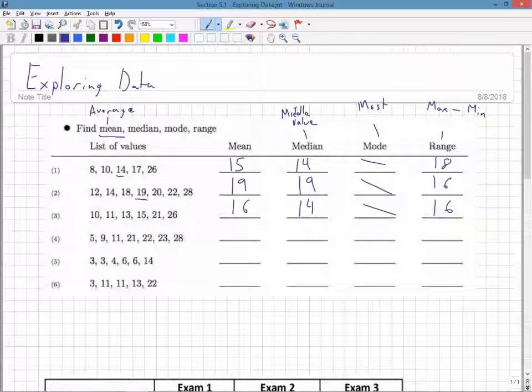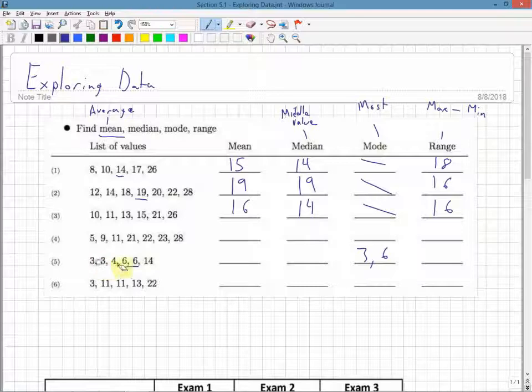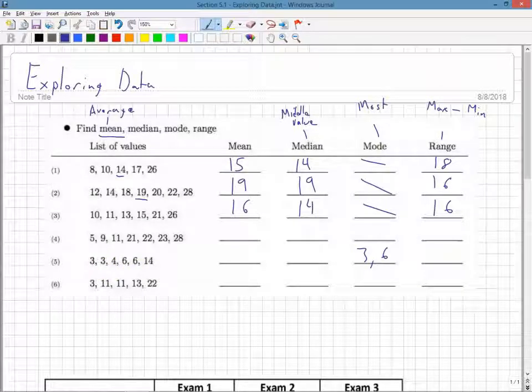Let's look at one that would have a mode, this one here. It actually has two modes: 3 and 6. So I would list those, 3 and 6, both of them together. We know how to find the mean and the median.